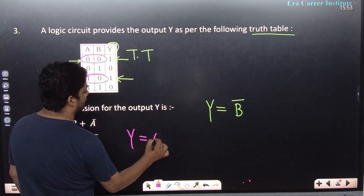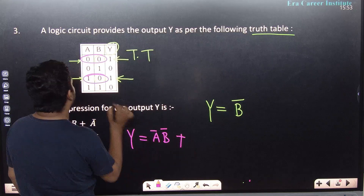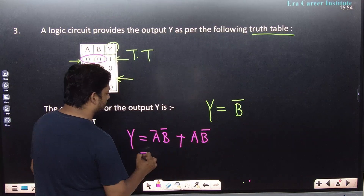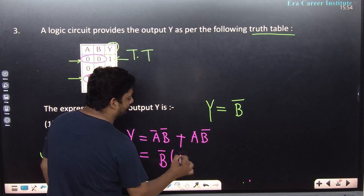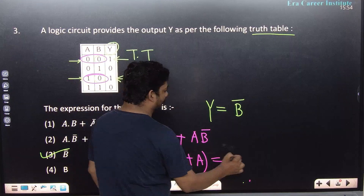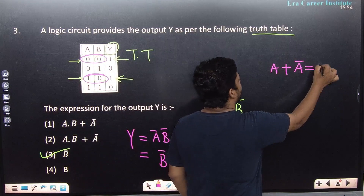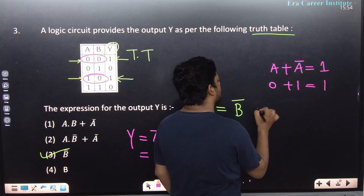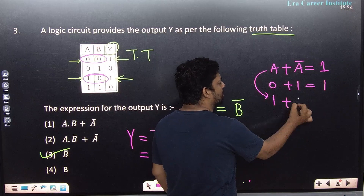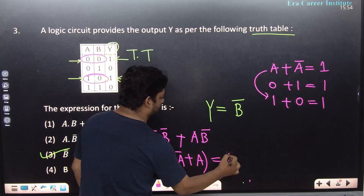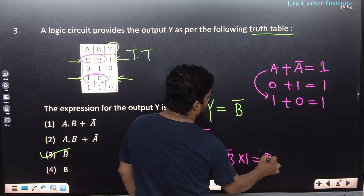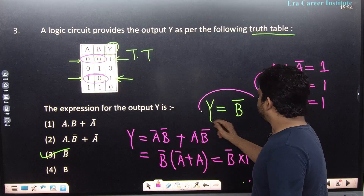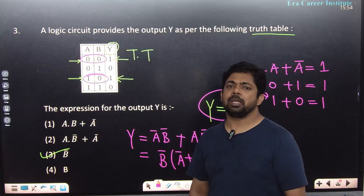Let's verify: when both are 0, we can write Ā·B̄. When A is 1 and the other is 0, we write A·B̄. Taking B̄ common gives B̄(Ā + A). Since Ā + A always equals 1 — if A is 0, then 0+1=1; if A is 1, then 1+0=1 — the expression simplifies to B̄·1 = B̄. So the answer is confirmed as B̄.